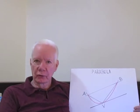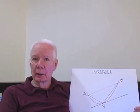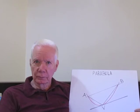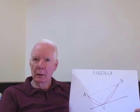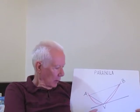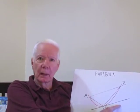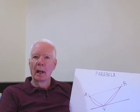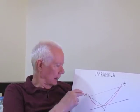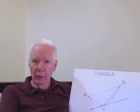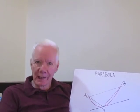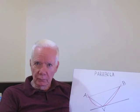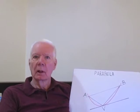The first step is to find the point V, the vertex. It is the point on the parabola where the tangent line is parallel to the chord. And these three points, A, B, and V, give us an inscribed triangle, and it is an approximation to the area of the segment.